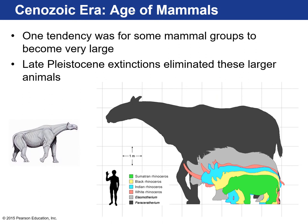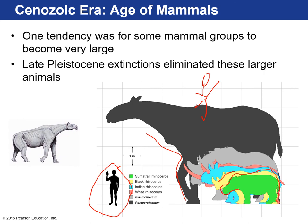Some of these mammal groups became very large. An example is the Paraceratherium — like a hornless rhino, but enormous. Looking at it to scale with a modern black rhinoceros and an average man, this organism was almost six meters tall. Imagine — that's like four hippopotamuses stacked on top of each other.